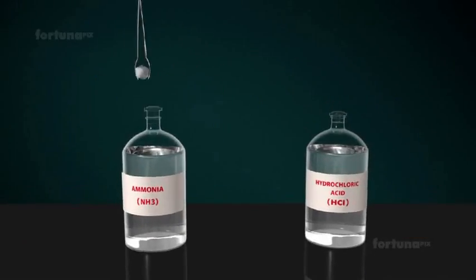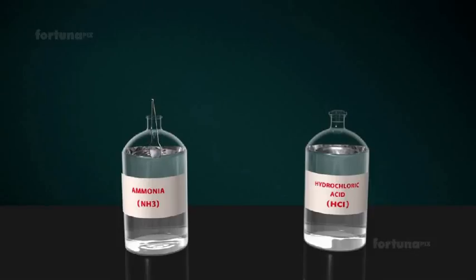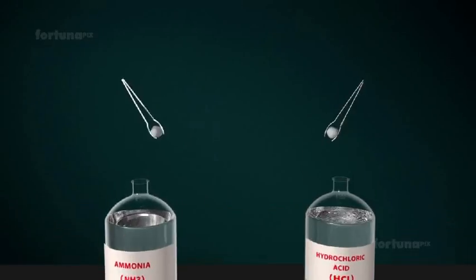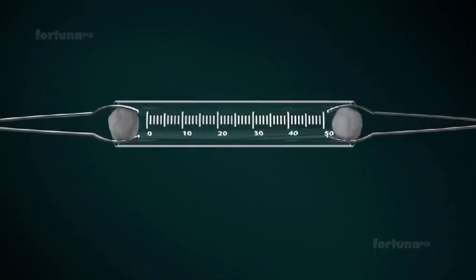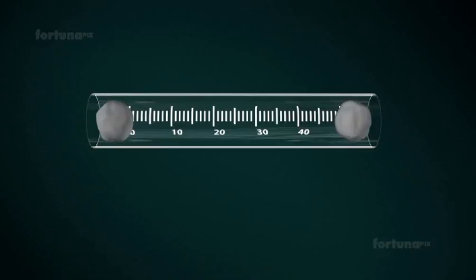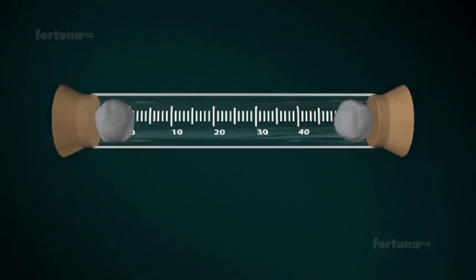Take a cotton ball and dip it in Ammonia solution NH3. Dip another cotton ball in Hydrogen Chloride solution HCl. Place the two cotton balls in the glass tube at the two ends simultaneously and close the two ends of the tube with rubber corks.